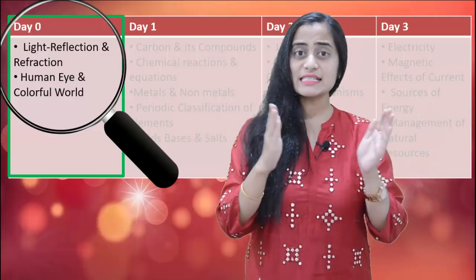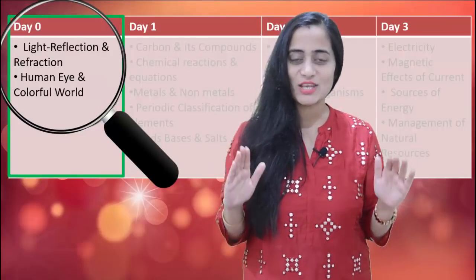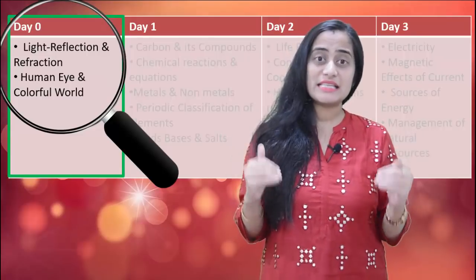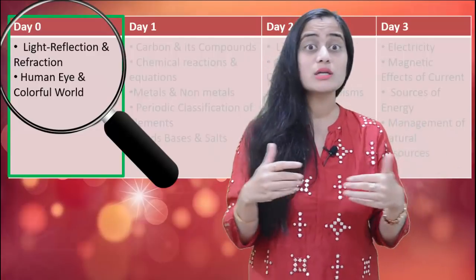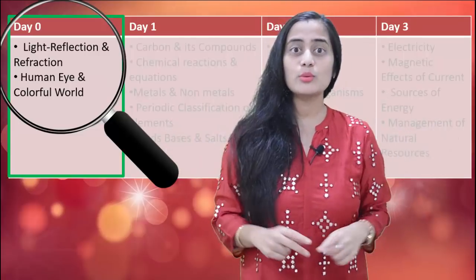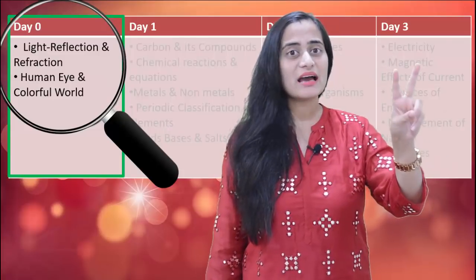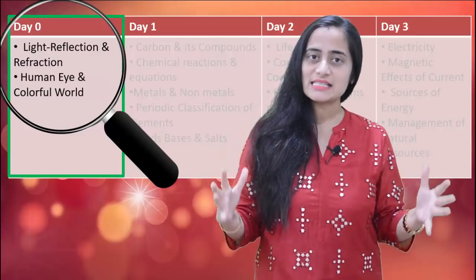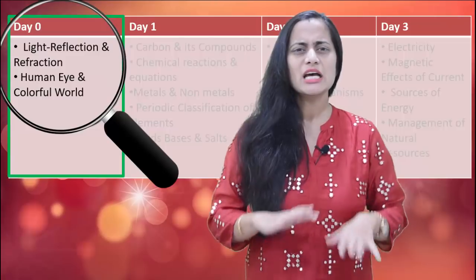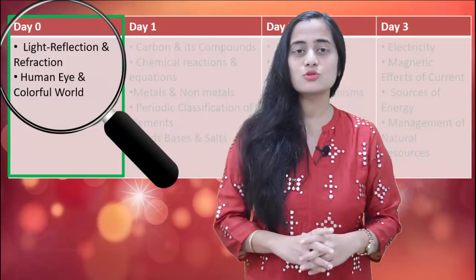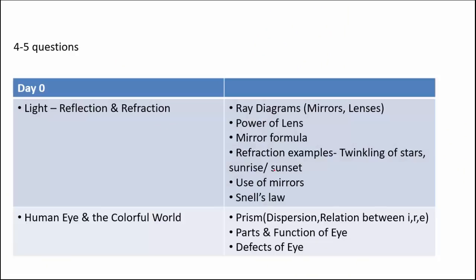In 10th science we have physics, chemistry and biology and we cannot ignore any of these. What we plan to do on day 0 is cover 2 very important chapters of physics. Since we are just starting our preparation, we are not in a hurry because we have 3 more days. We will complete 2 lessons — light reflection and refraction, and human eye and the colourful world. These are the 2 lengthiest lessons in physics, and you can expect around 4 to 5 questions from these 2 lessons.